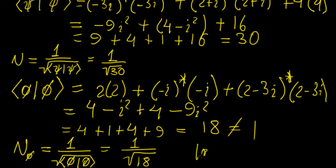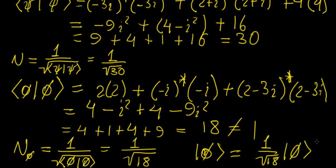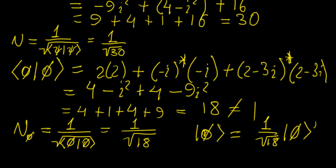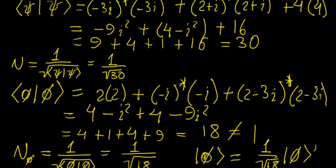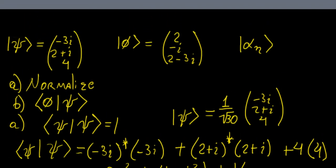So the normalized eigenfunction phi is equal to 1 over √18 times the original eigenfunction. We have now normalized both of them, which means we can actually perform some operations and extract probabilities.